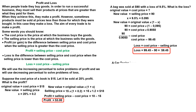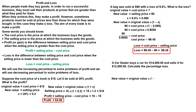A car dealer buys a car for $14,000 and sells it for $12,500. Calculate the percentage loss. We use the percentage decrease because this is a loss problem. The original value is the cost price and the new value is the selling price. Take the formula and perform the calculations.